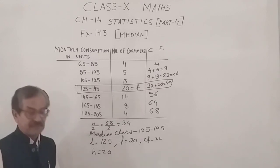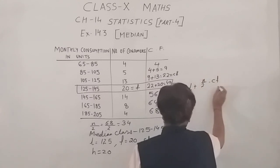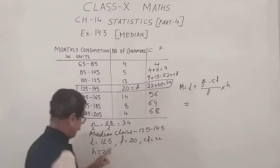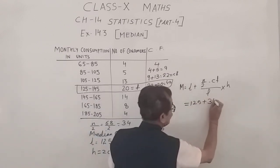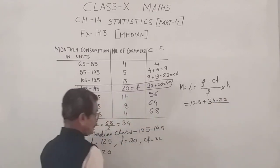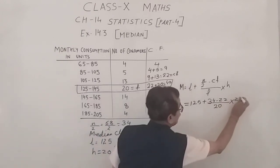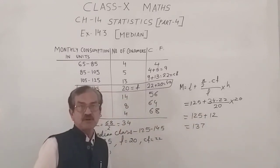So, we have all the terms written here. And now, we will proceed to find the median. Median by using the median formula. We have M for median L plus N by 2 minus CF upon F into H. That is the formula of the median. Now, let's find the median. L, 125 plus N by 2, 34 CF, 22 upon F, 20 into H, also 20. Simply, this 2020 gets cancelled and we are left with 125 plus 12 that is 137. Again, as I told you,